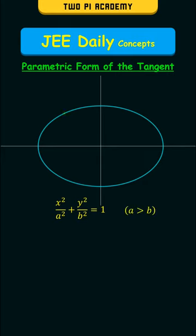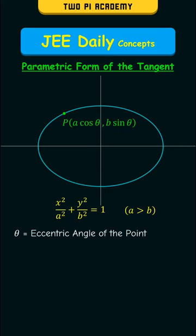And consider a point on the ellipse. In the parametric form, the coordinates of the point are given by p a cos theta comma b sin theta, where theta is the eccentric angle of the point.